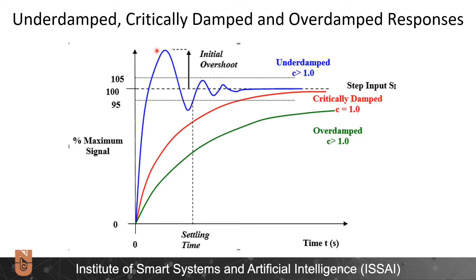Here we see the visual illustrations of the under-damped, critically damped, and over-damped responses for a step input. In the under-damped case, we have oscillations and an initial overshoot. The critically damped case is the fastest response of the system without having oscillations. And the over-damped response is, as the name implies, a sluggish, slower response than the other ones.